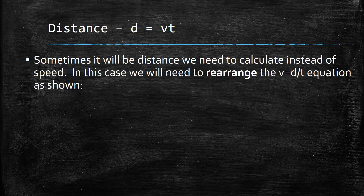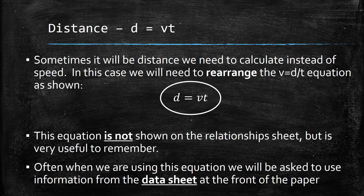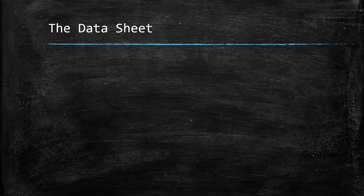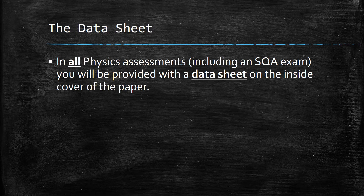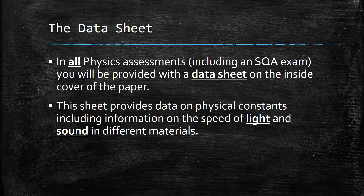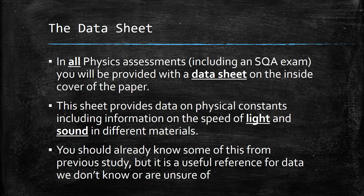Distance: D is equal to VT. Sometimes it will be distance that we'll need to calculate instead of speed. In this case, we rearrange the equation V equals D over T. This equation is not on the relationship sheet, but we use it very often. In all physics assessments, including SQA exams and unit assessments, you will be provided with a data sheet on the inside front cover of the paper. That sheet provides information on physical constants, including the speed of light and sound in different materials.